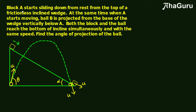Let us read the question carefully as we start solving. Block A starts sliding down from rest — its initial velocity is 0 m/s — from the top of a frictionless inclined wedge. The acceleration is g·sin(α), since the net force along the incline is m·g·sin(α) divided by m, with no friction. At the same time A starts moving, ball B is projected from the base. Both the block and the ball reach the bottom simultaneously, so if the travel time is t seconds, it is t for both.